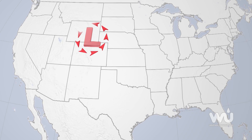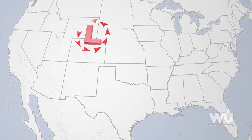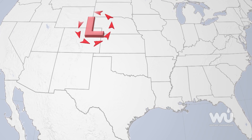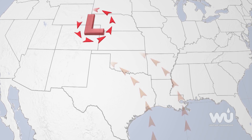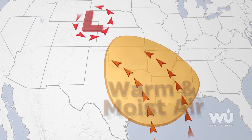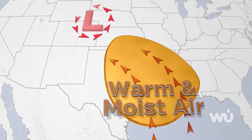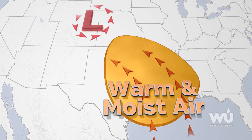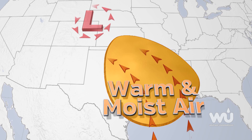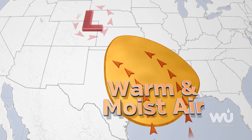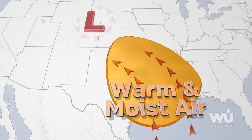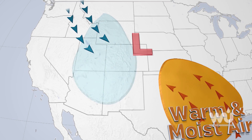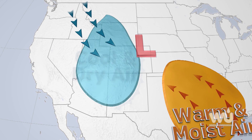A low-pressure system strengthens as it moves off the Rockies and into the Plains. The counterclockwise rotation associated with the low-pressure system pulls warm and moist air northward from the Gulf of Mexico. At the same time, cold air from the north moves in behind this system, creating a cold front that extends southward from the center of the low-pressure system.